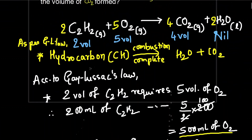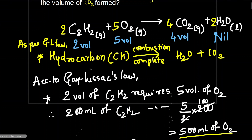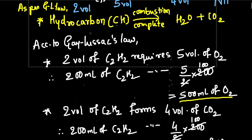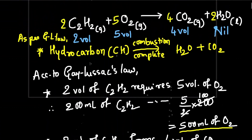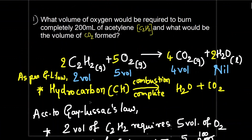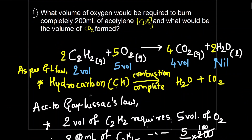So the answer is: oxygen required is 500 ml and carbon dioxide formed is 400 ml. The calculation is easy, but you must write out all the steps — according to Gay-Lussac's law — otherwise you will not get marks.